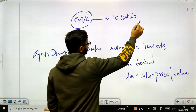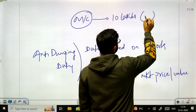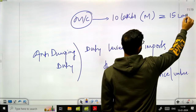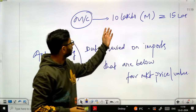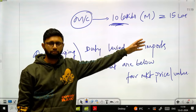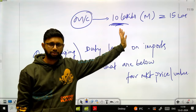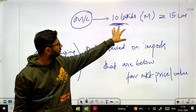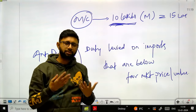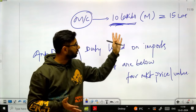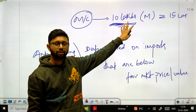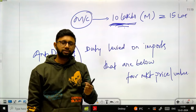Anti-dumping duty is a duty levied on imports sold below fair market price. For example, if a machine's production cost is 10 lakh rupees and its fair market value is 15 lakh rupees, but a foreign company sells it into India at 5 lakh rupees via government support, that business practice harms the Indian industry.